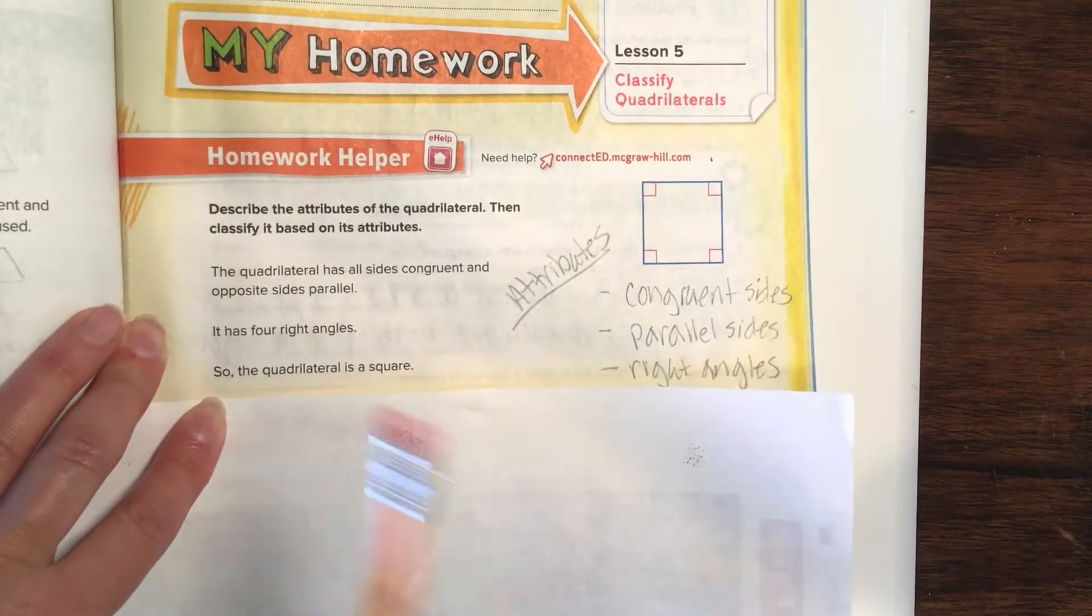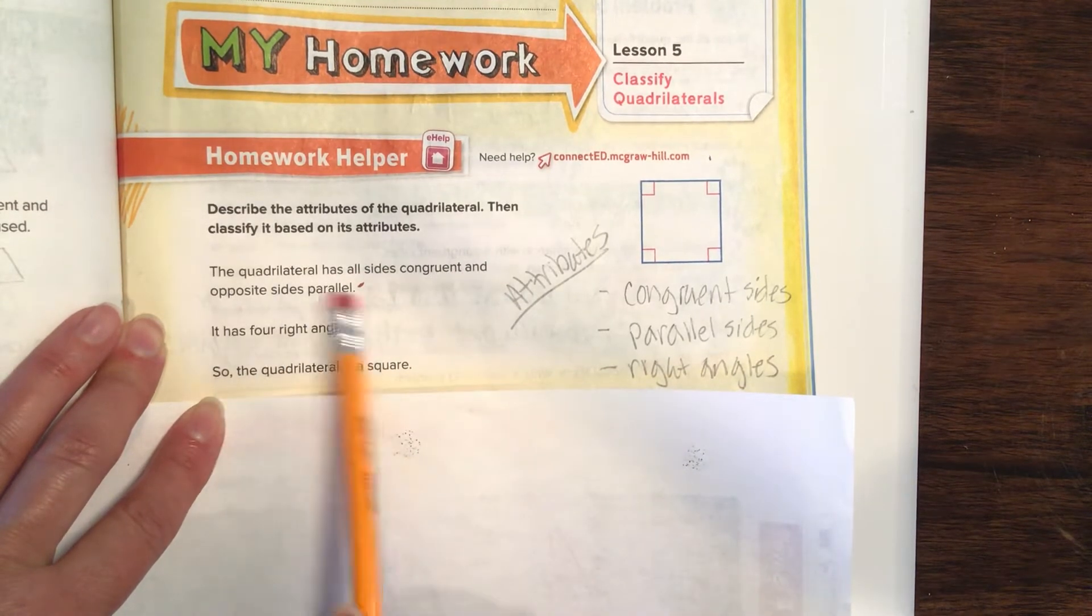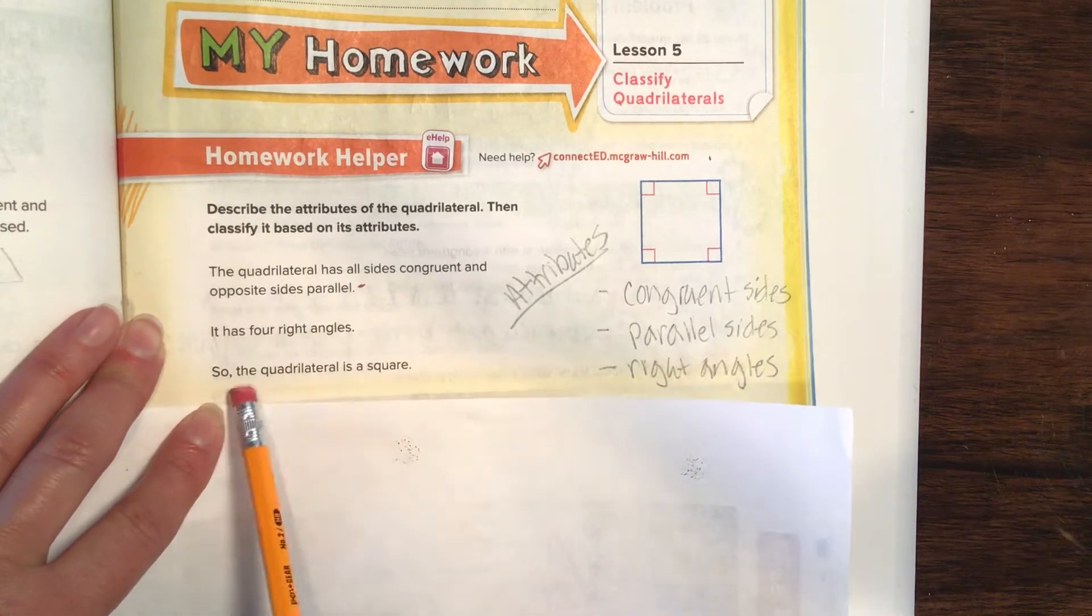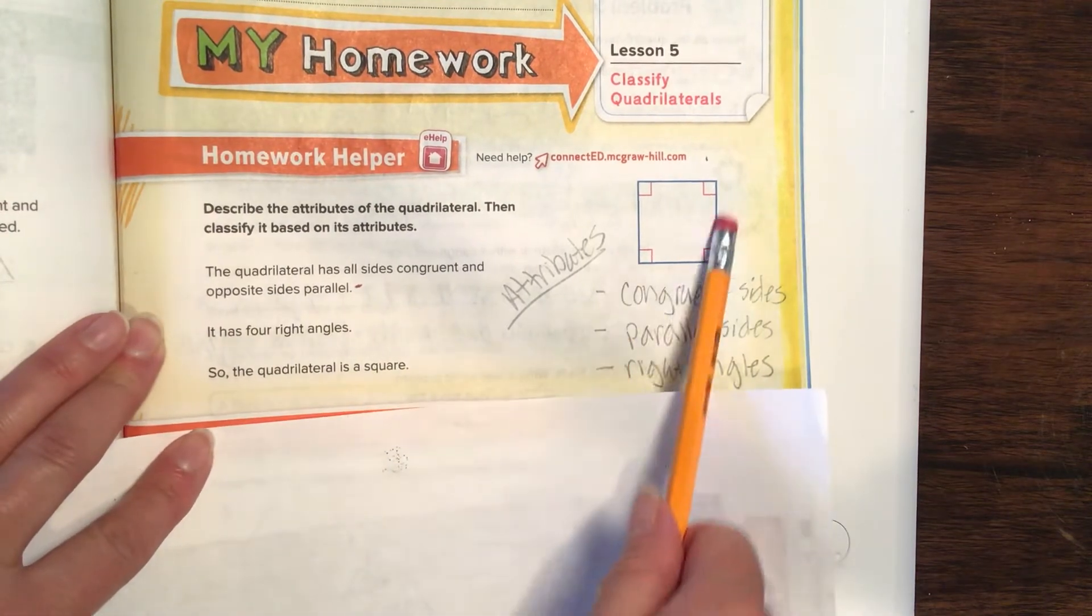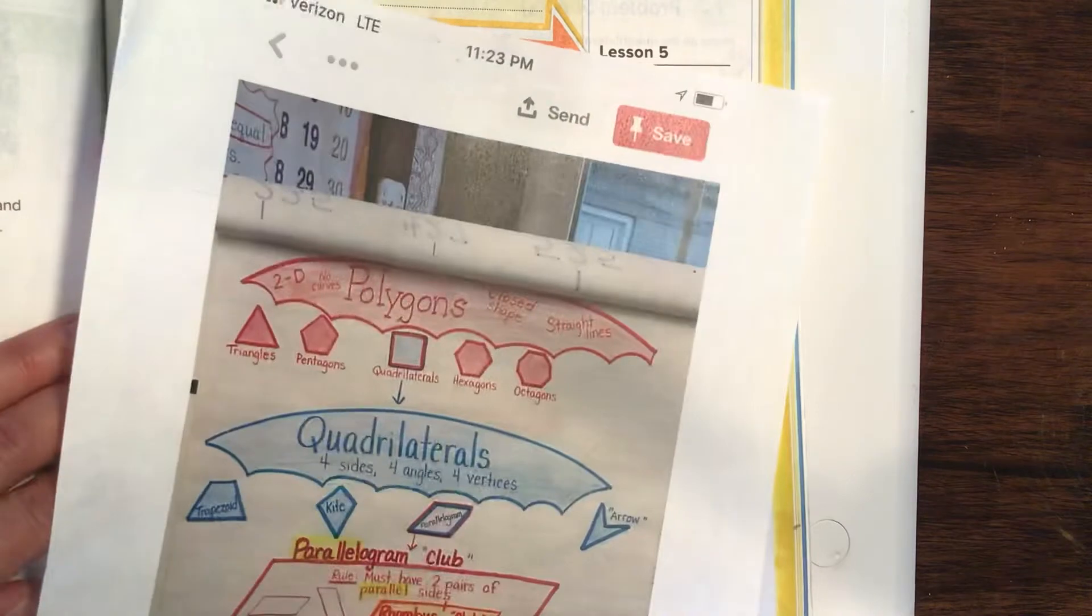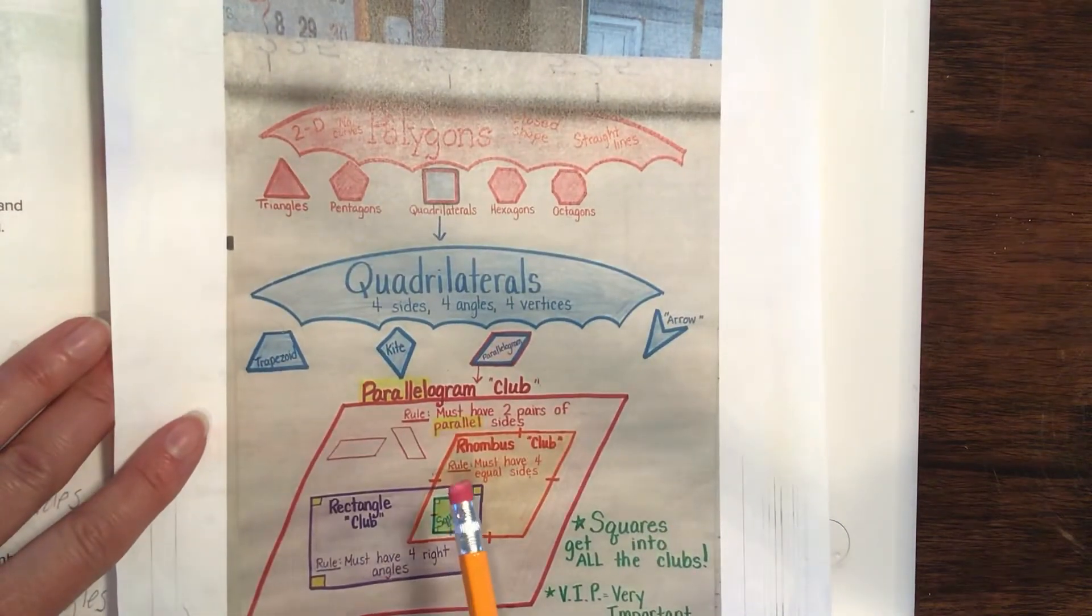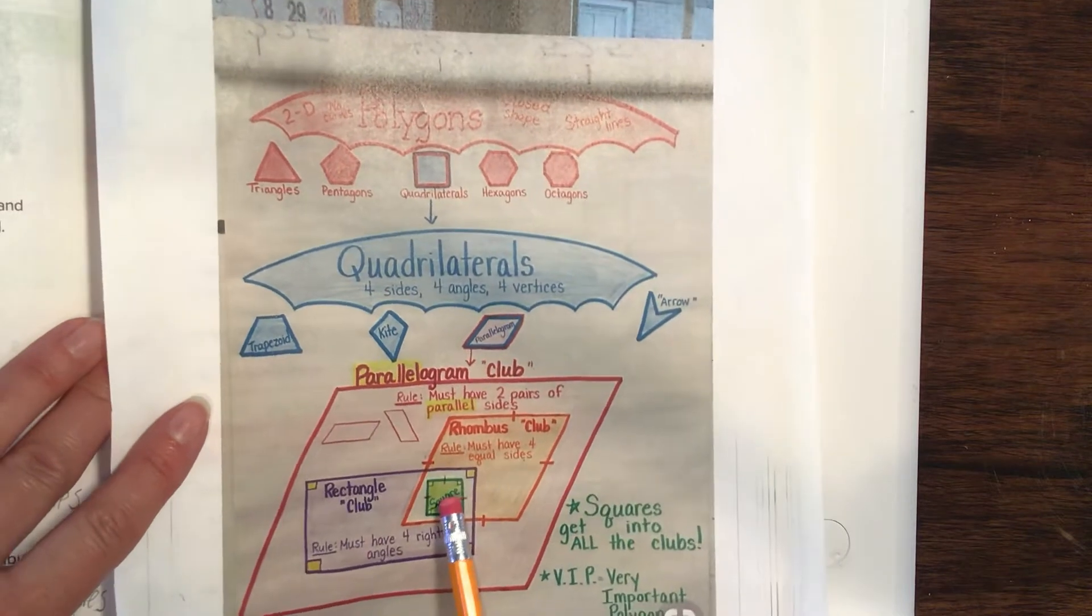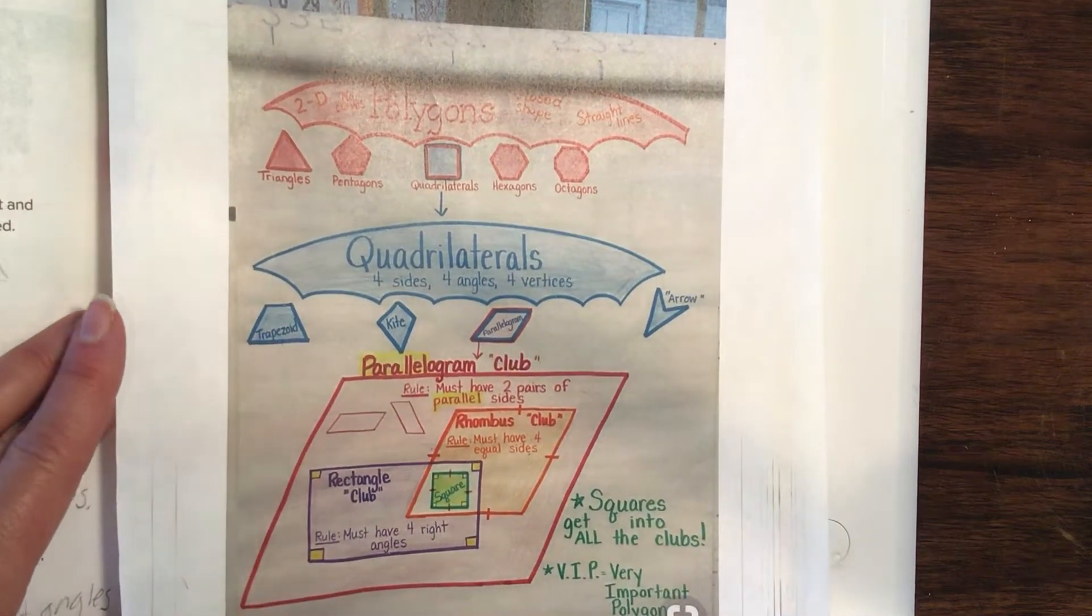Please understand that a quadrilateral has all sides congruent and opposite sides parallel. Four right angles, so the quadrilateral is the square. From our little paper that we should keep with us at all times within our math book, we realize that a square is a very important polygon. It fits into all of the clubs.